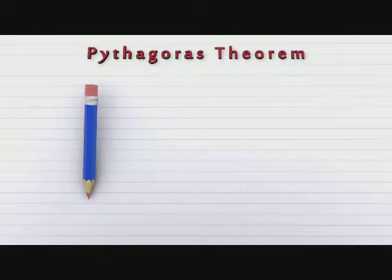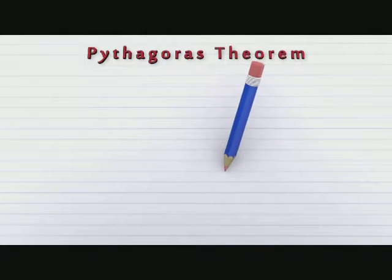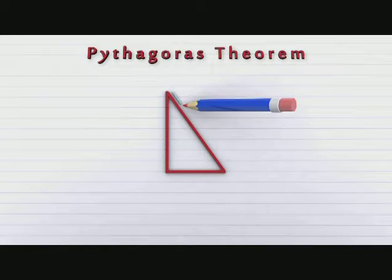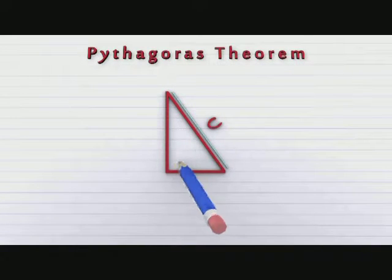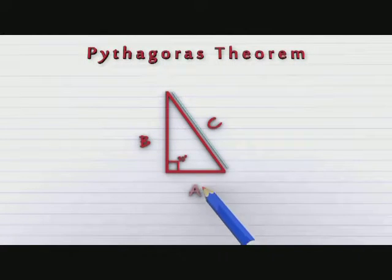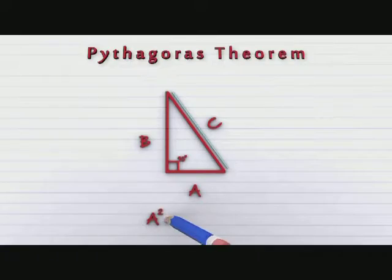Now what does Pythagoras' theorem state? It tells us that in a right-angled triangle, the square of the hypotenuse, which is C, the side opposite the right-angle, is equal to the sum of the squares of the other two sides, B and A, which means A-square plus B-square is equal to C-square.